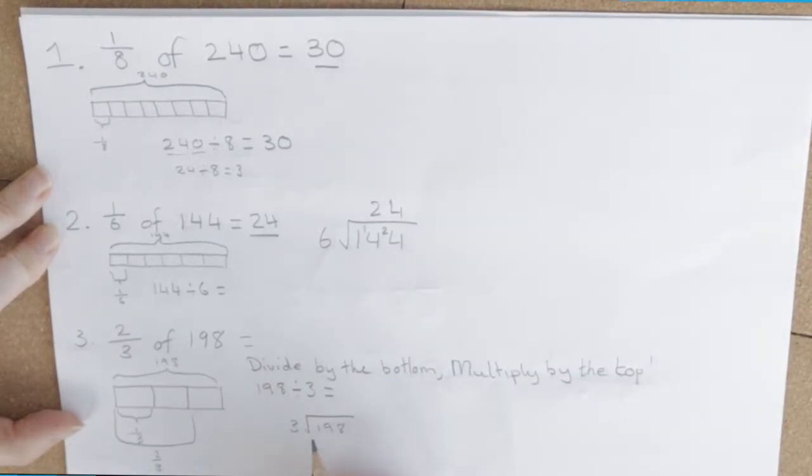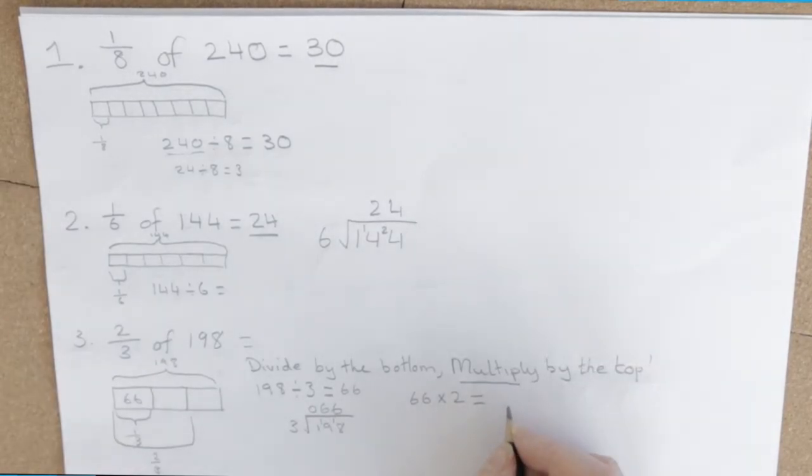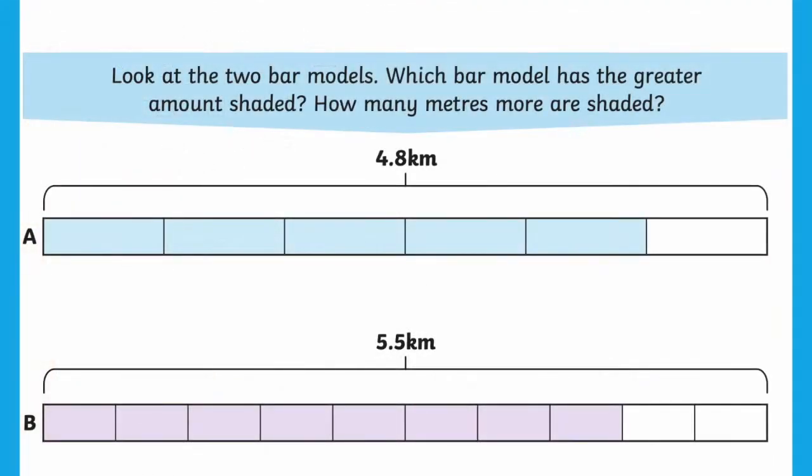Each question is provided with detailed explanations and visual representations of the answers. Draw out the bar models if you need to and think about how much is a whole bar worth? How many equal parts does each bar have? What is the value of each part? How many parts are shaded?